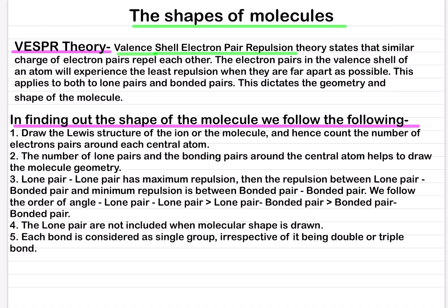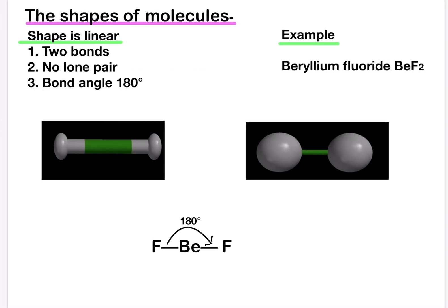Let's see some examples. The shape of molecules. Number one, shape of molecule of beryllium fluoride BEF2. Shape is linear. Why is the shape linear? Because it has two bonds, there is no lone pair, and the bond angle naturally is 180 degrees.